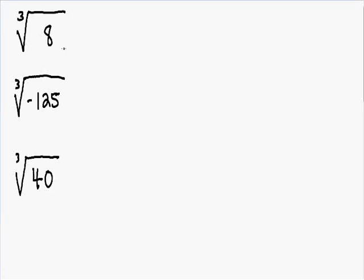Welcome to my video on cube roots. Anytime you see this number 3 in the top left corner of the radical, this is what we call a cube root. The idea is you want to find some number multiplied by itself three times that is equal to the number inside of the root. This will make a lot more sense once we get started.